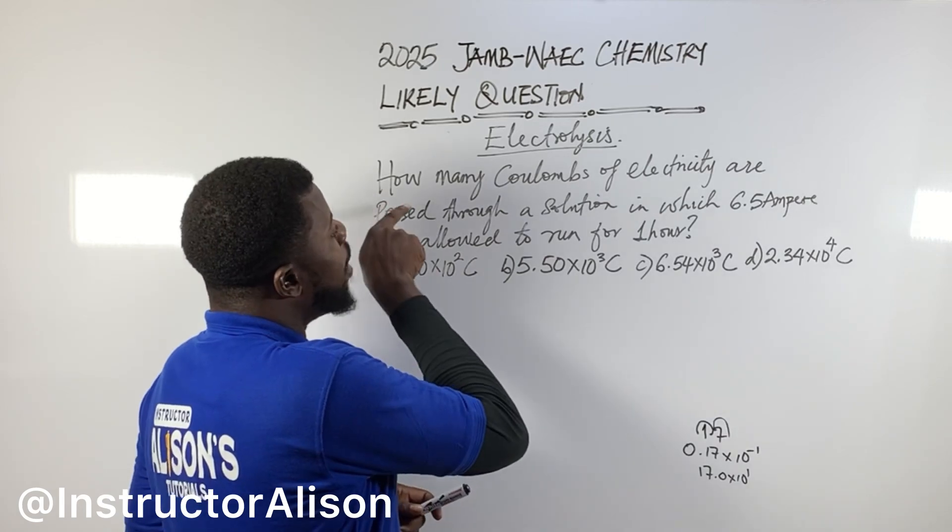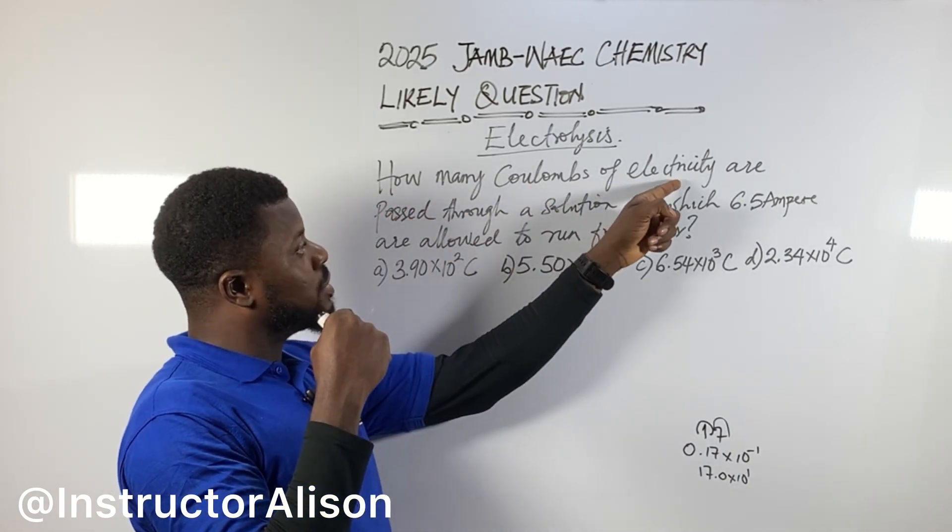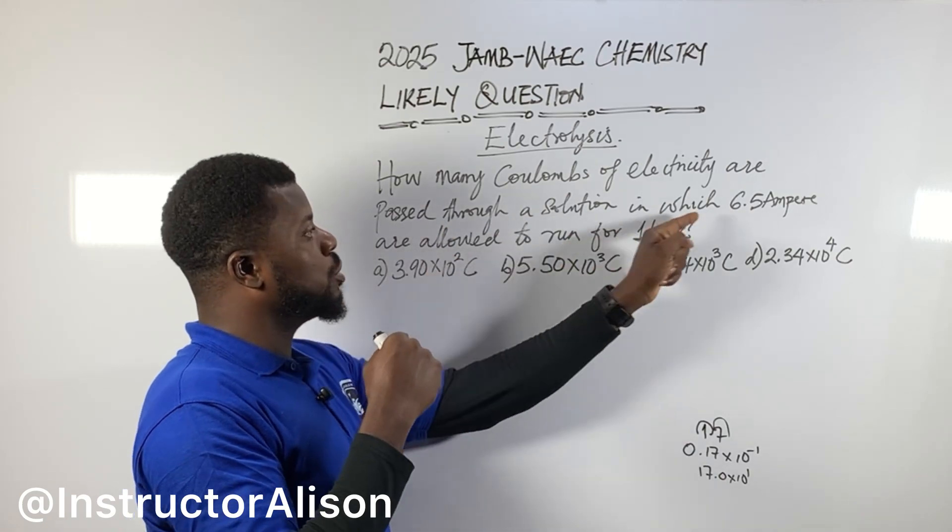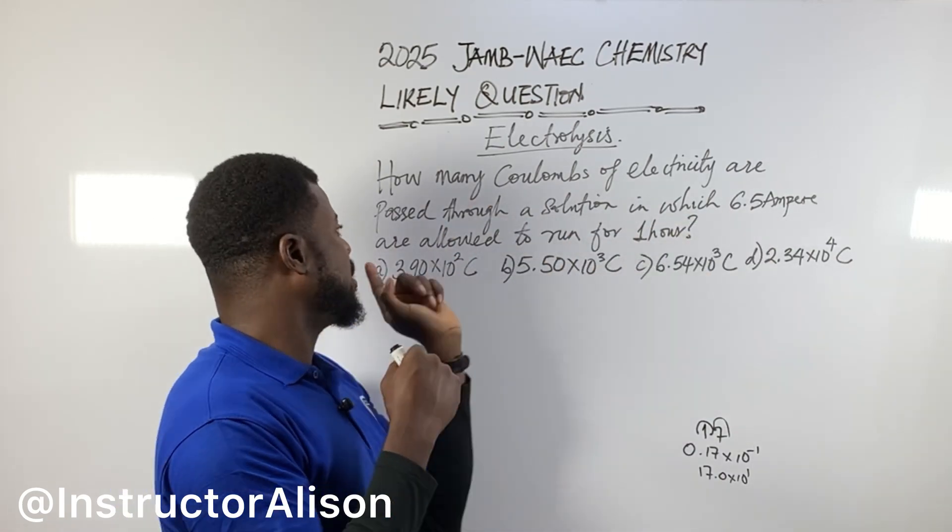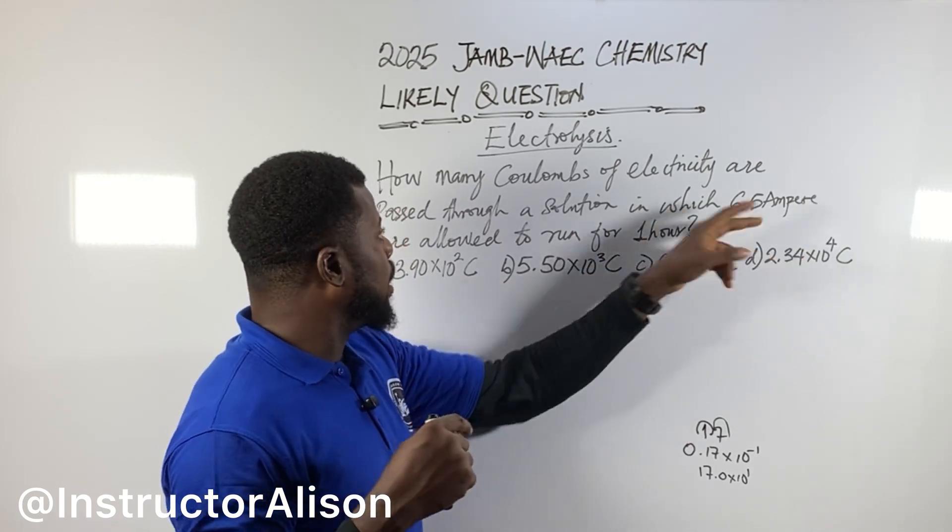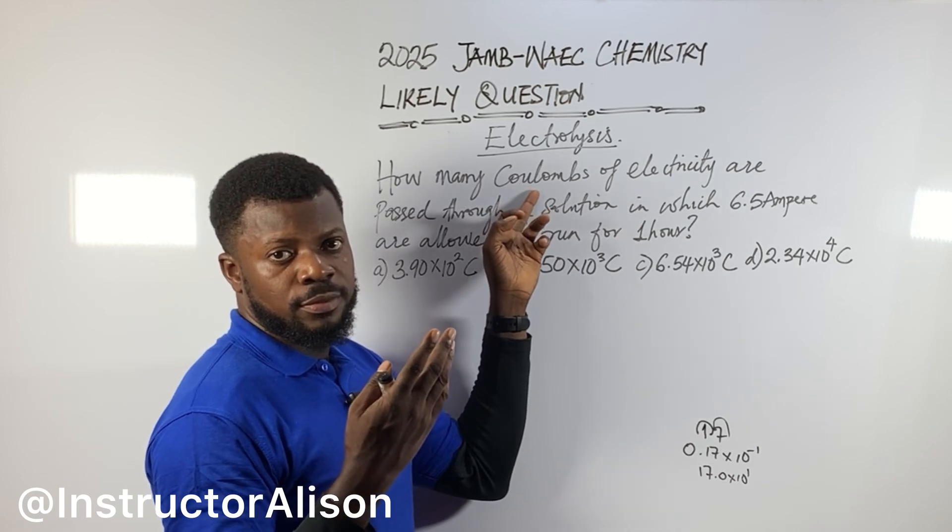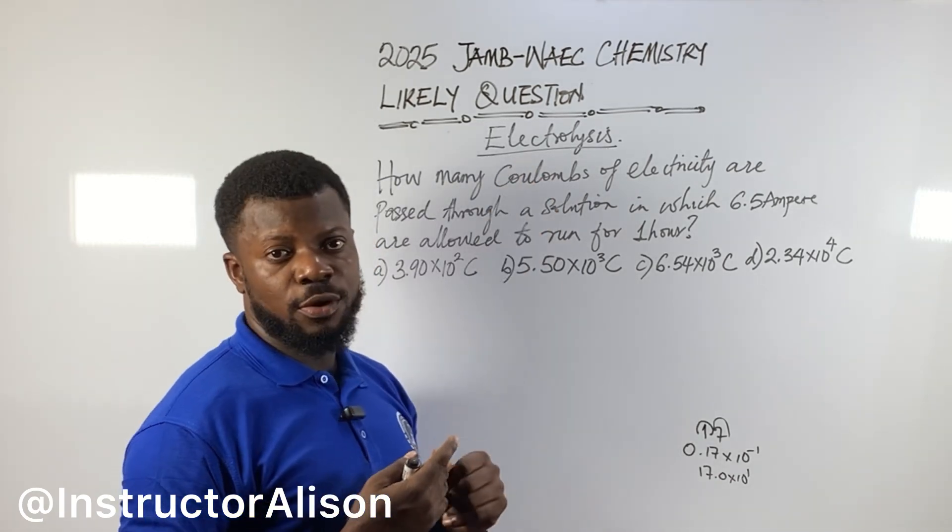So what are you going to do now? They say, first of all, how many coulombs of electricity are passed through a solution in which 6.5 ampere are allowed to run for one hour?